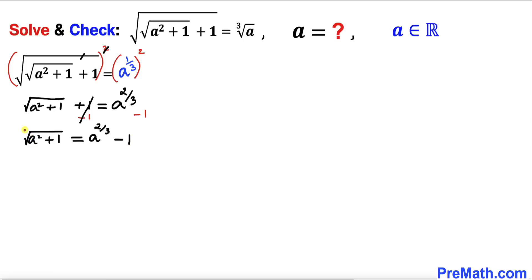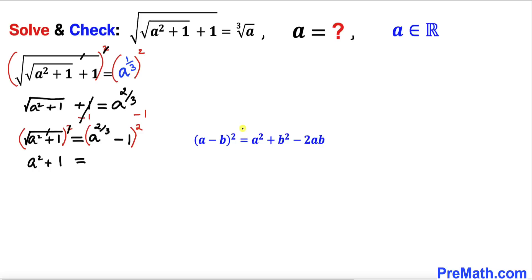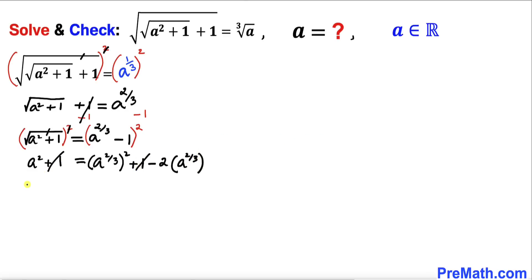We undo this square root again by squaring both sides. The square and square root cancel on the left, giving a squared plus one. On the right, applying the identity (a minus b) squared, we get a to the power 2/3, squared, plus one minus two times a to the power 2/3. The ones cancel, leaving a squared equals a to the power 4/3 minus two times a to the power 2/3.